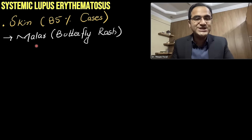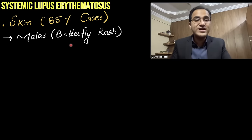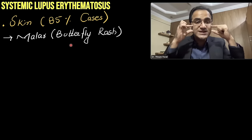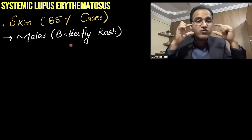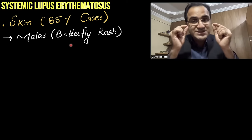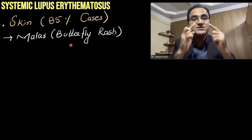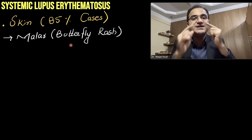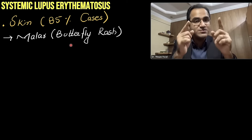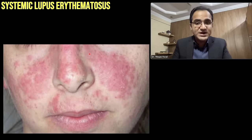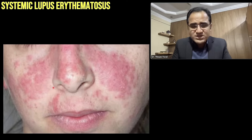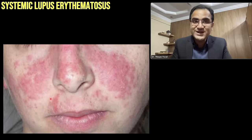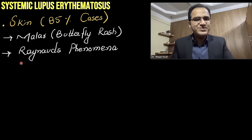In the skin manifestations, patients develop malar rash or butterfly rash — a rash present over the cheekbones that appears like the wings of a butterfly. This malar rash spares the nasolabial folds — this is a very classical point. Looking at a picture of butterfly rash, you can see the wings of the butterfly, and the nasolabial folds are not affected.